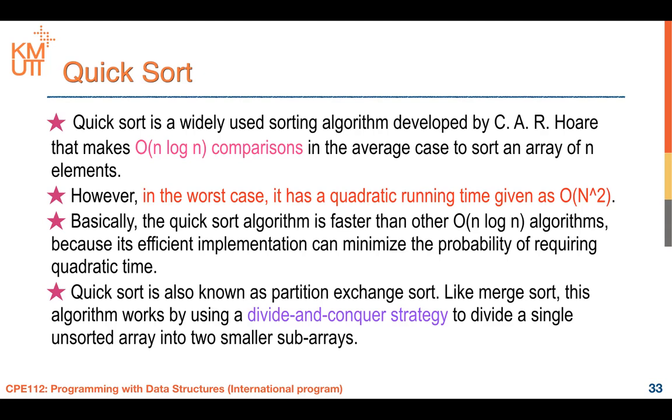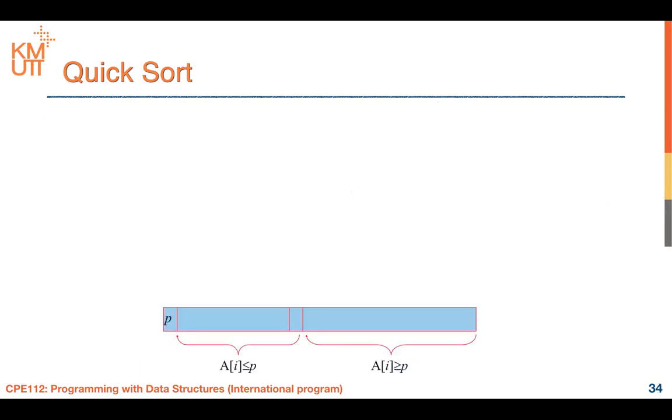This divide-and-conquer strategy is what makes both merge sort and QuickSort achieve O(n log n) complexity.